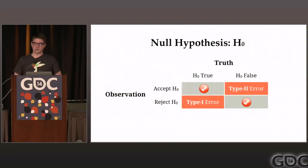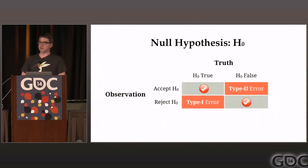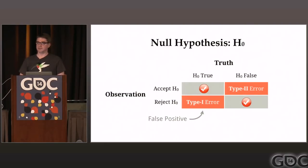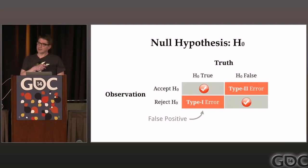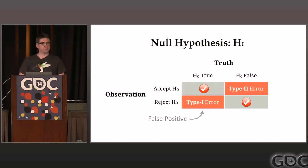What you end up with is a truth table: maybe the hypothesis is true and we accept it — a good result. But maybe the hypothesis is true, there's no difference, but we reject it — we see an outlier and say 'I think I made a good positive change to my game' and accept that as actionable. But in fact, that's a false positive. And that's the root of evil for null hypothesis testing in the A/B world.